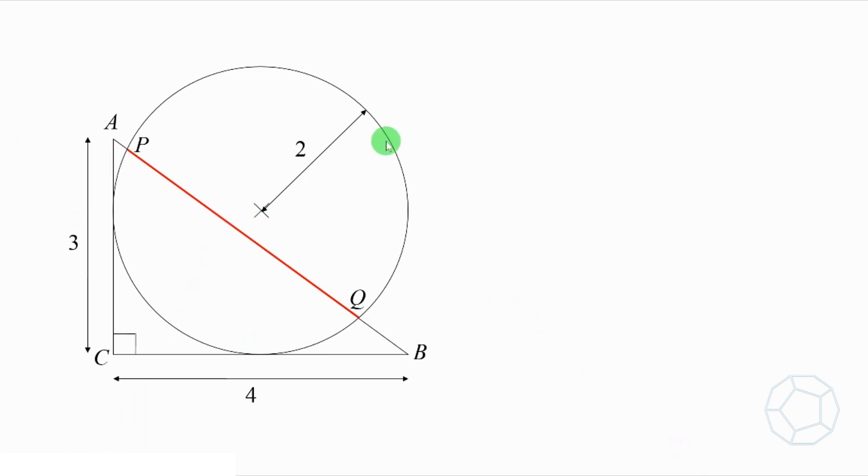The radius of the circle is 2. The lengths of AC and BC are 3 and 4, respectively. Find the length of the chord PQ.